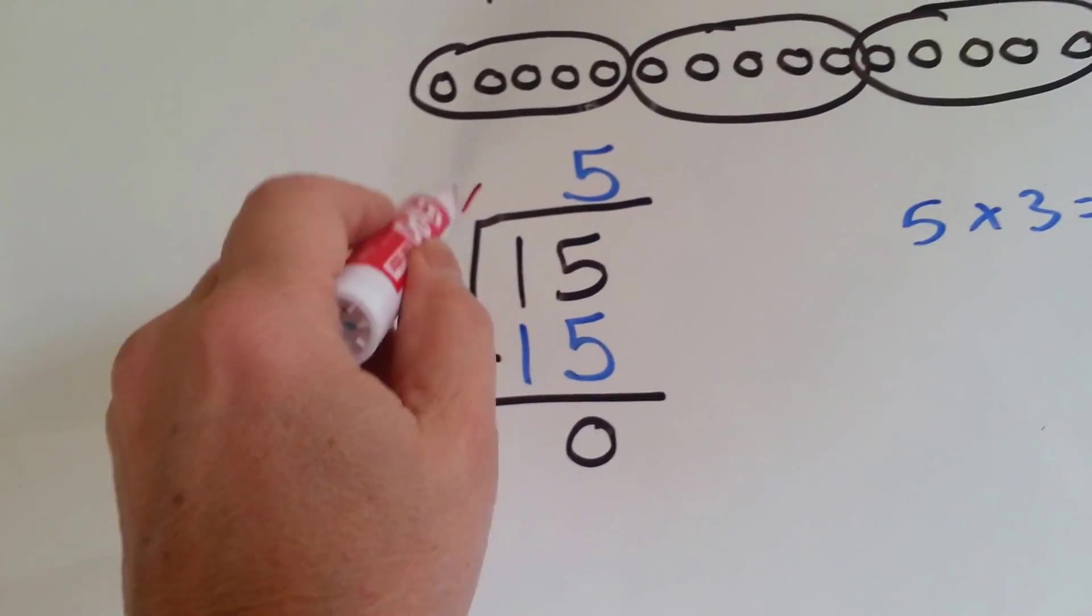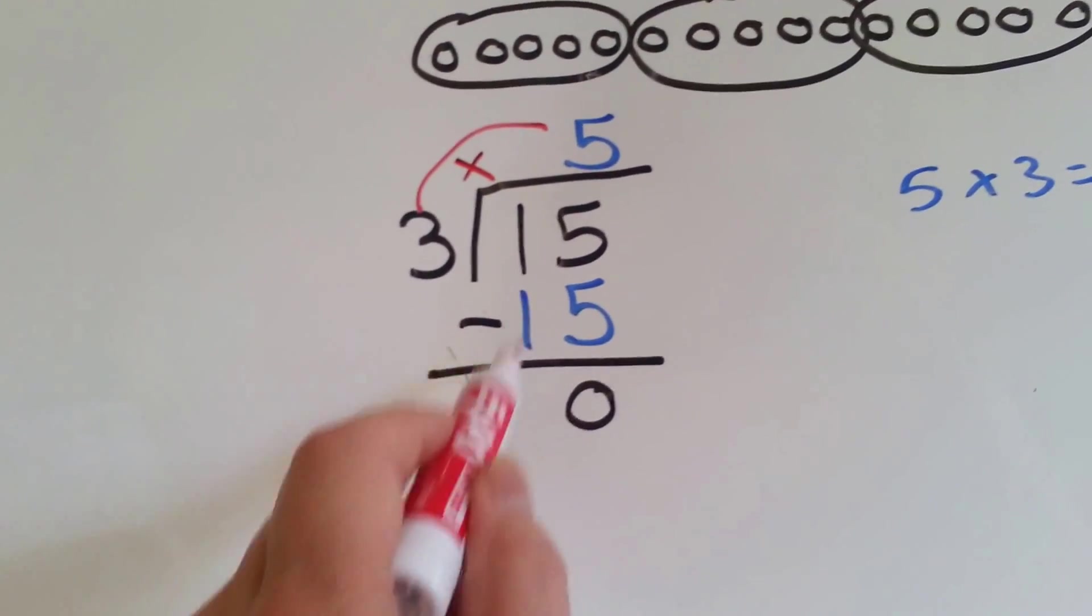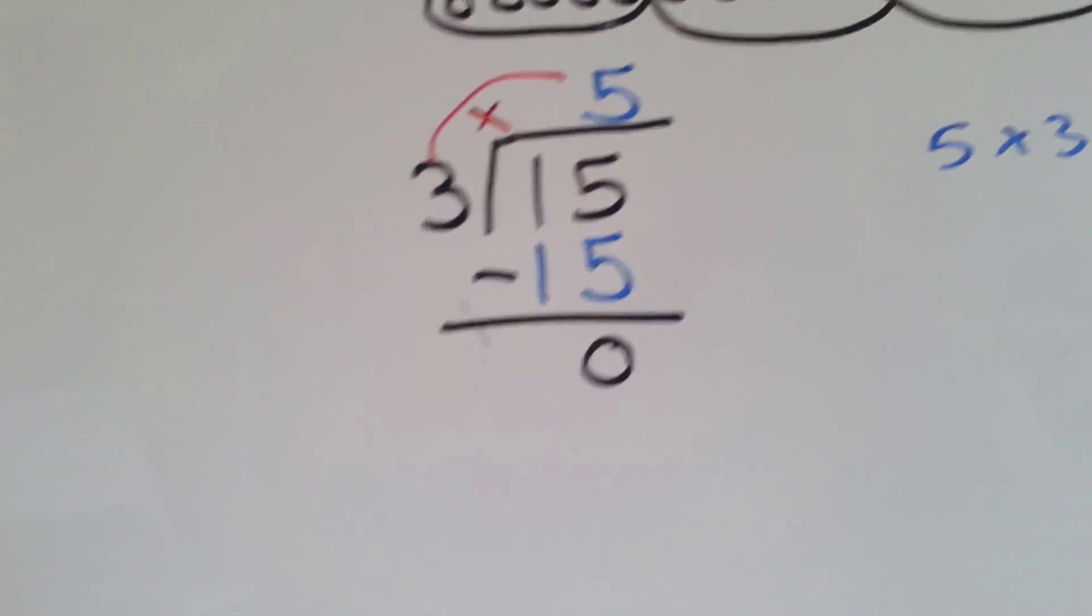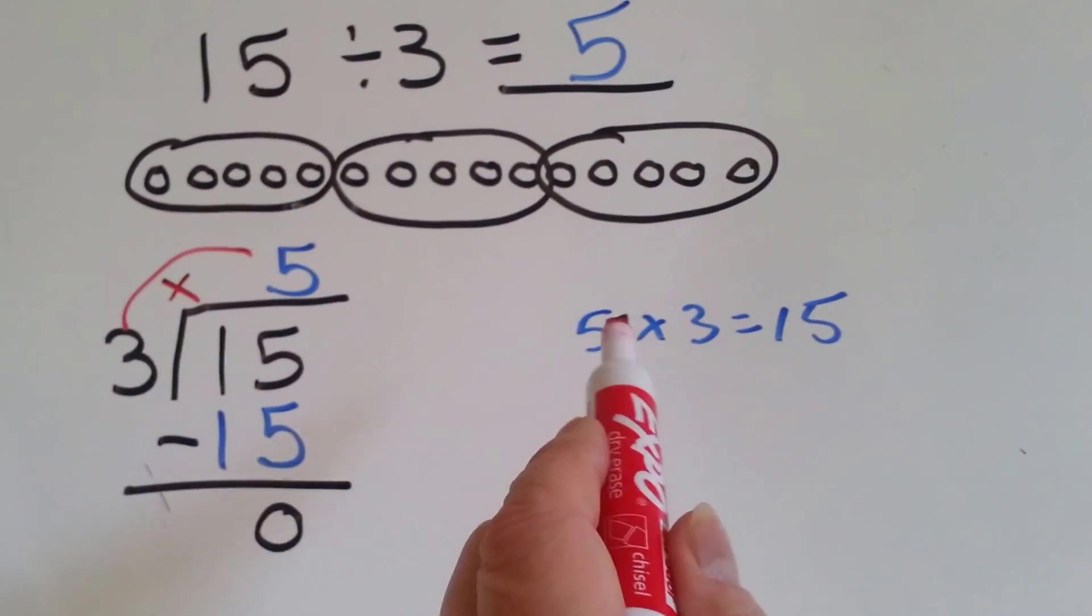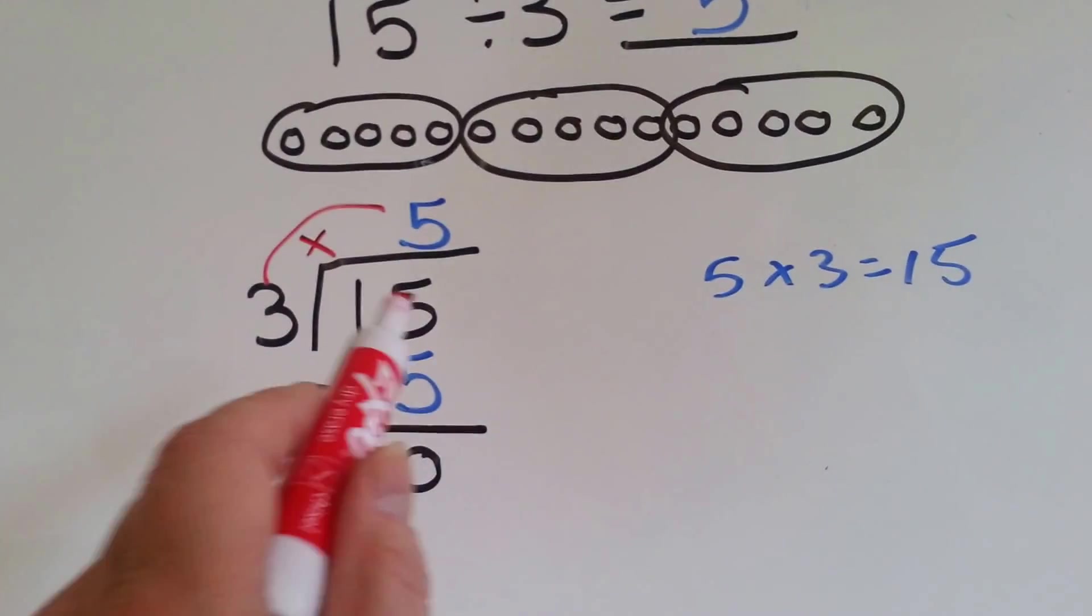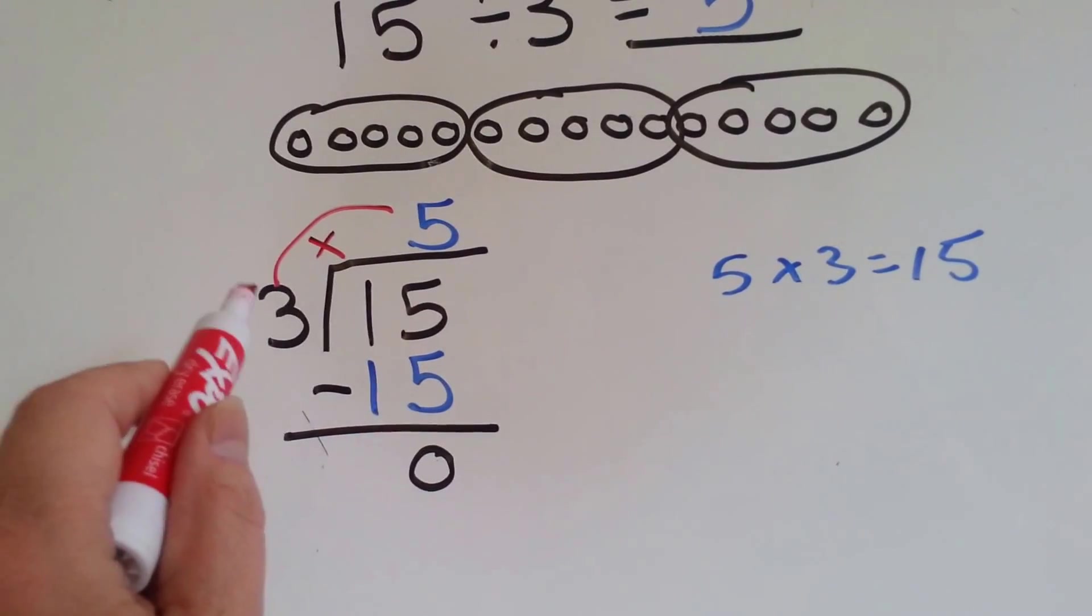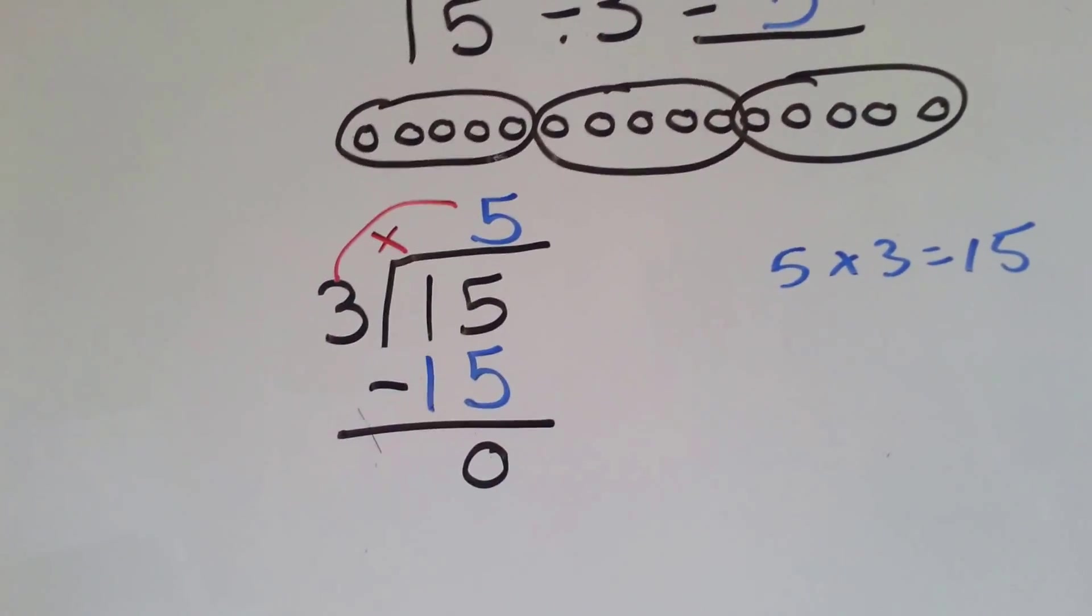So 3 times 5 is 15. We put that here, we do our subtraction, and we get 0. So it's the same thing as 5 times 3 equals 15, but backwards. Big number, the dividend goes on the inside, the divisor goes on the outside, and the quotient goes on the top. Let's try another one.